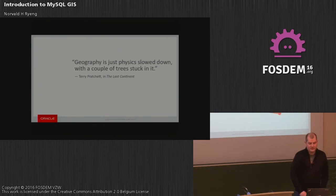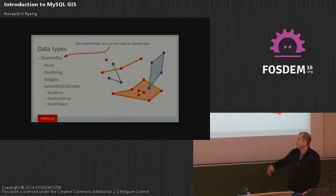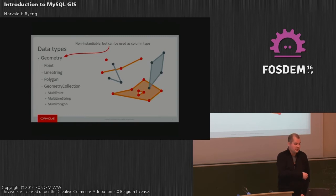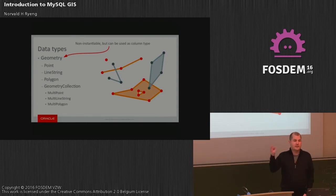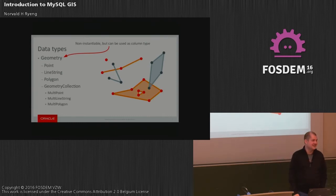We support the simple data types from OGC Simple Features. There are eight types in a hierarchy. You have the geometry type — it's not instantiable, but useful as a column type to store all other subtypes. The three basic types are points, line strings, and polygons. We have collection types: a generic geometry collection and type-specific collections. All our functions support all these types, and unlike some other open source GIS databases, we also support geometry collections in all functions.